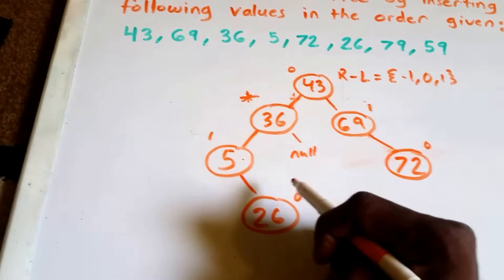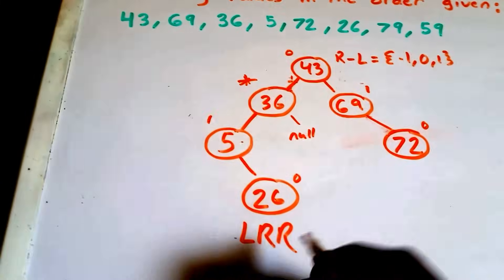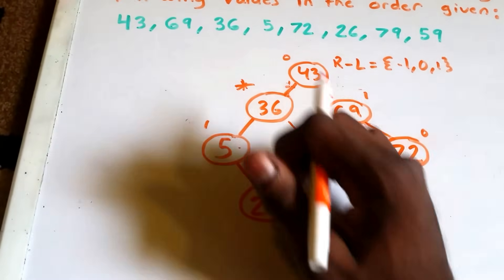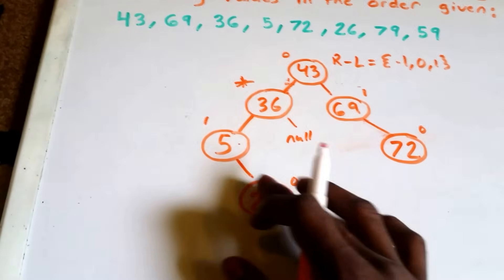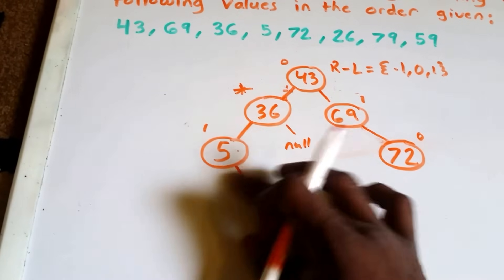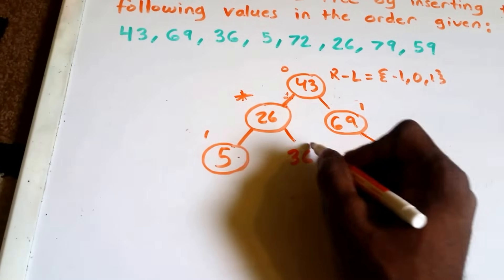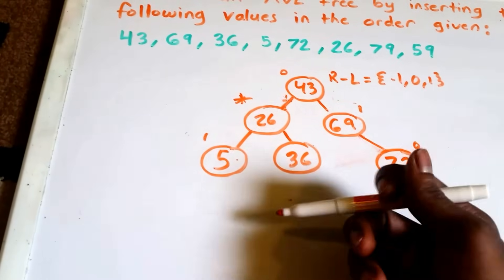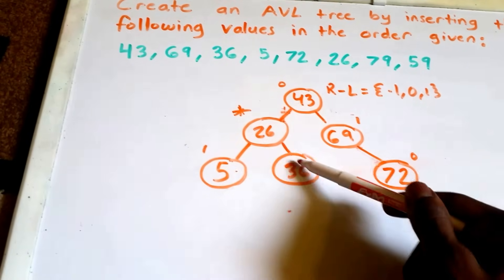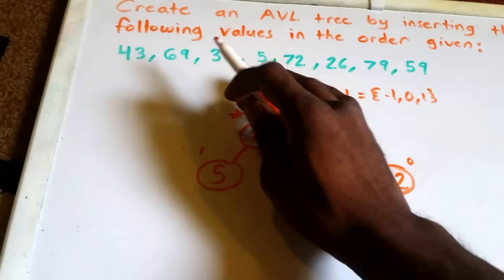We need to rebalance this using what's called the left-right rotation. Rather than doing every single step, we'll show the result of applying it. Node 26 moves all the way up, and node 36 comes down to the right. So 26 takes the position where 36 was, and 36 becomes the right child of 26. The tree still satisfies the binary search tree property: right child is greater than the parent, and left child is less than the parent. Our tree is balanced again.